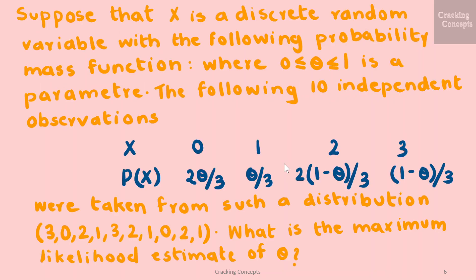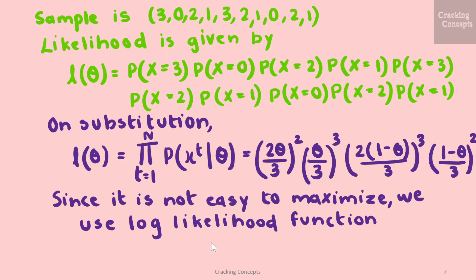Now we will see an example of calculating the maximum likelihood estimation. Suppose we have a discrete random variable x with a probability mass function where 0 ≤ θ ≤ 1 is a parameter. We are given 10 independent observations and the values of x and their probabilities. We are asked to find the maximum likelihood estimate of θ. First, we find the likelihood, which is given by the product of probabilities of all individual experiments — P(x=3) multiplied by P(x=0), and so on, through P(x=1).